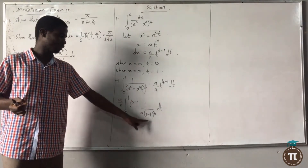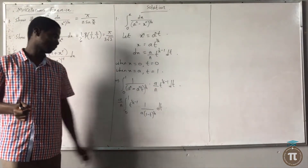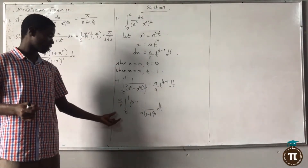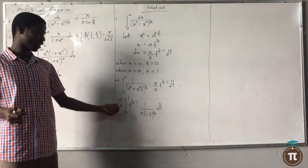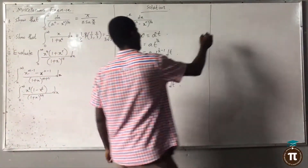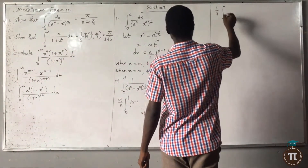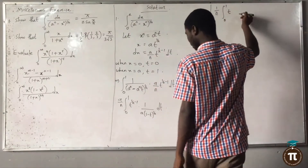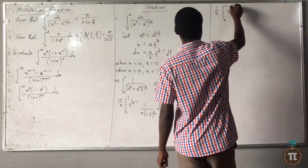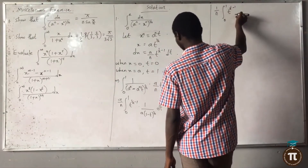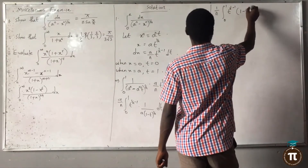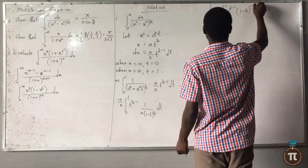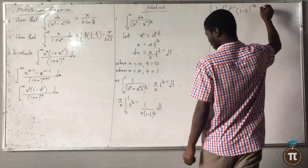Then I have (1 minus t)^(1/n). The a can also come outside because it is a constant. When it comes outside, I will be left with 1/n outside. So I will have 1/n times the integral from 0 to 1 of t^(1/n - 1) times (1 minus t)^(-1/n) dt.